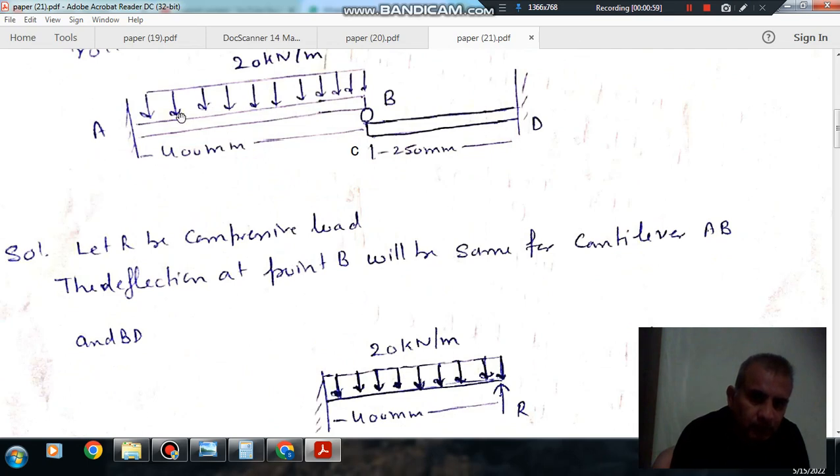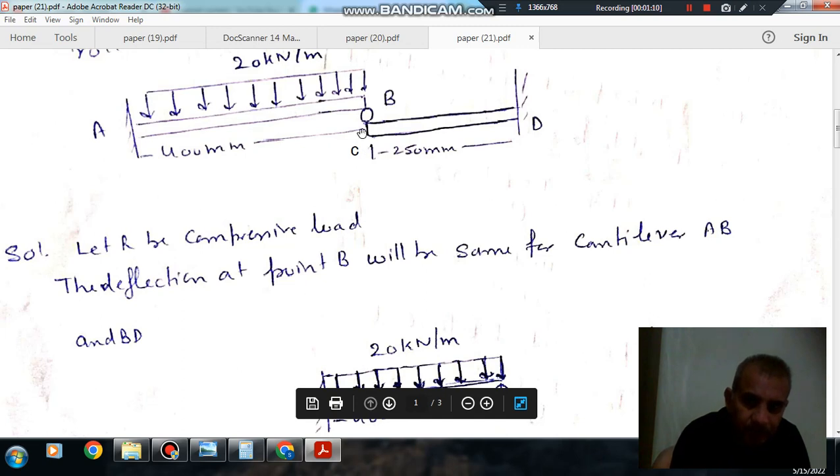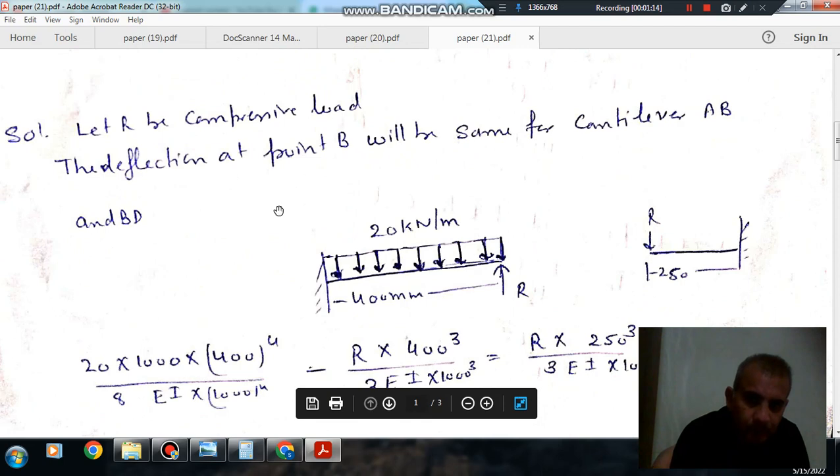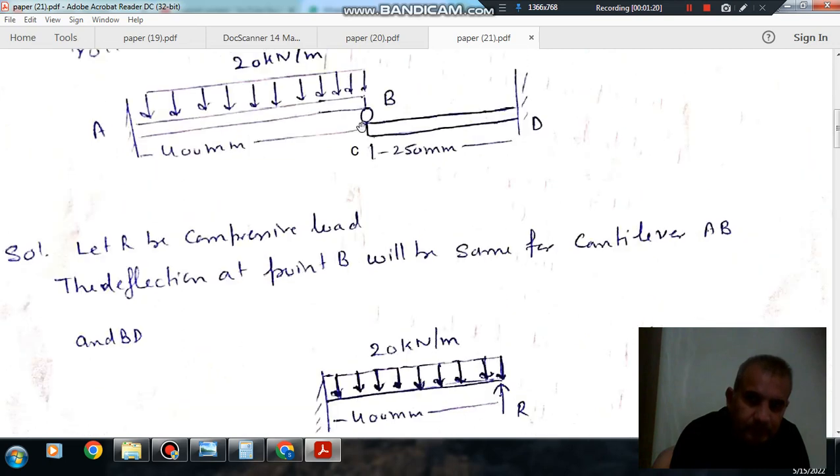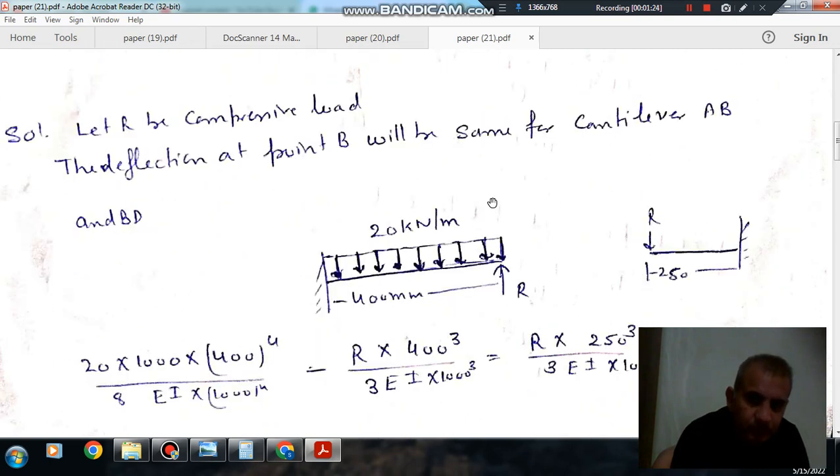So now you can take it like that, here there will be equal and opposite load because R is the reaction on AB and R is the reaction on CD. So deflection at B would be equal to deflection at C.